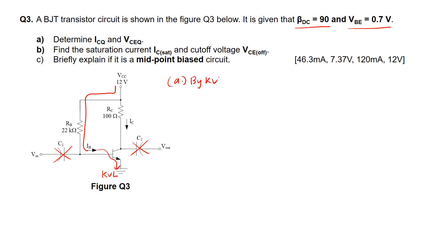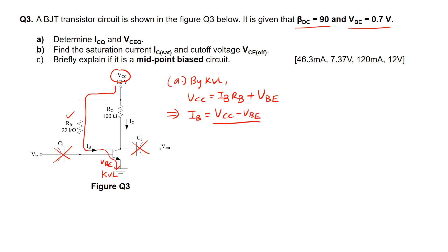By KVL, VCC equals IB·RB plus VBE. VCC is providing voltage to RB as well as to the VBE junction. Rearranging gives IB equals VCC minus VBE over RB. The value for VCC is 12 volts, minus VBE of 0.7 volts, divided by RB of 22 kilo-ohms. Calculating this gives IB equals 540 microamperes.